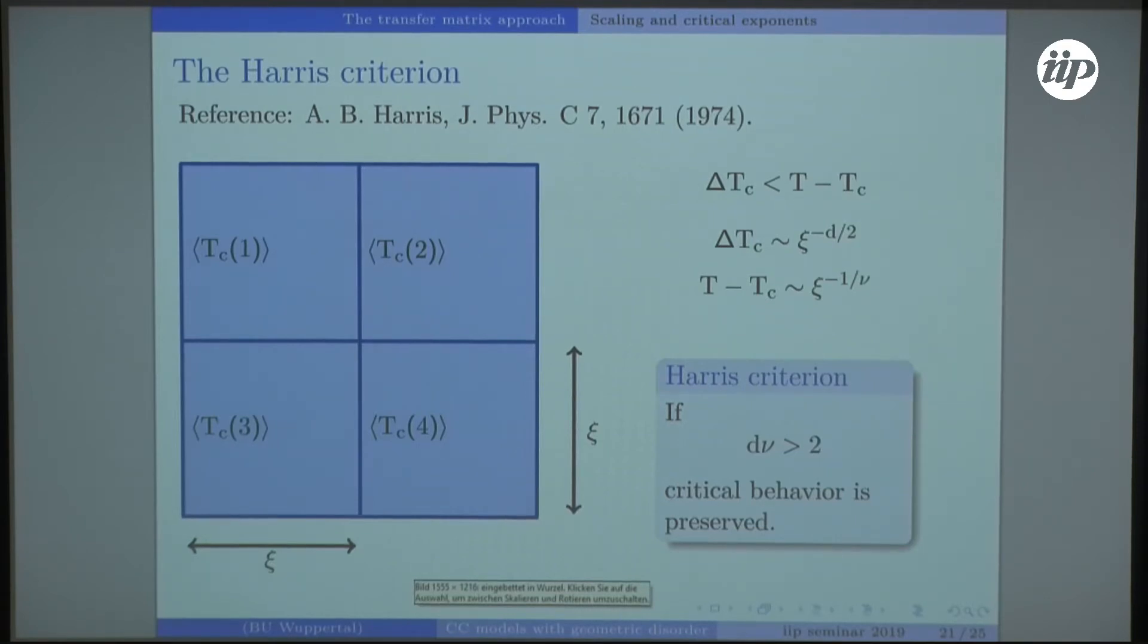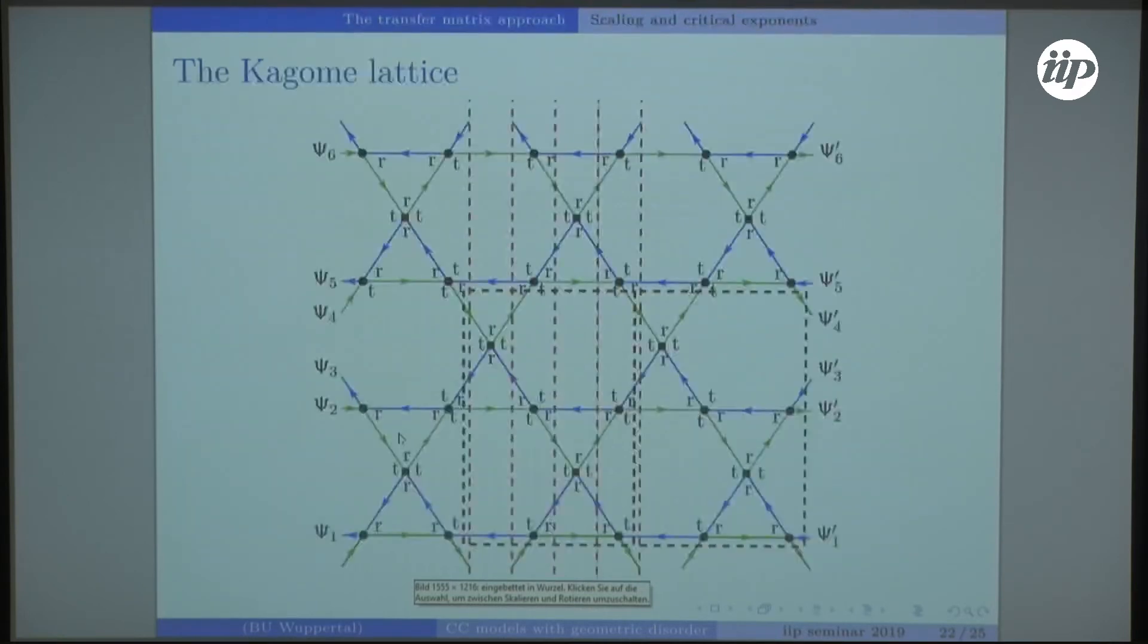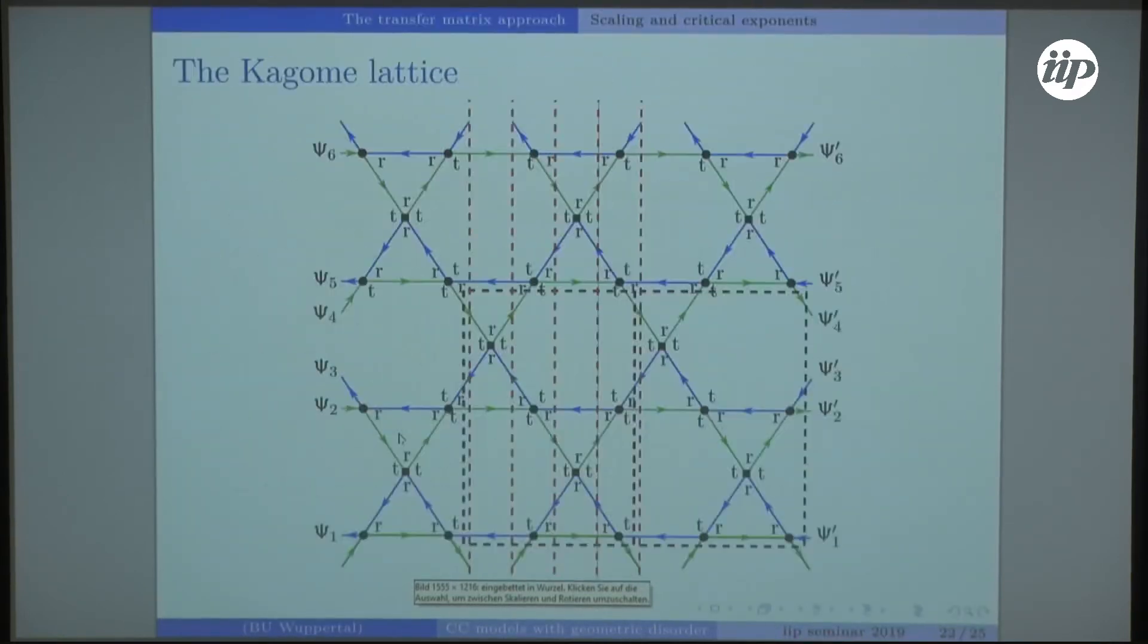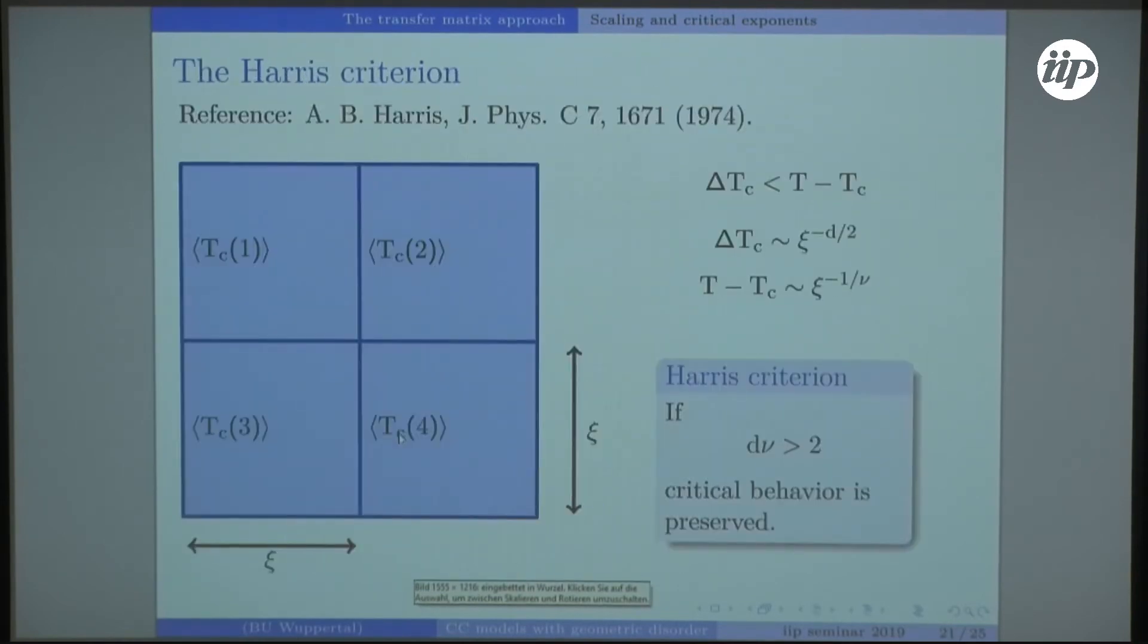With our critical exponent ν being 2.something, it seems like we have a problem. It cannot be that universality class changes.